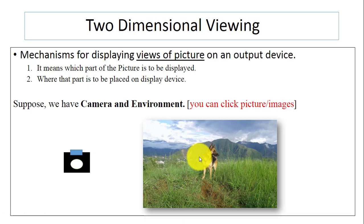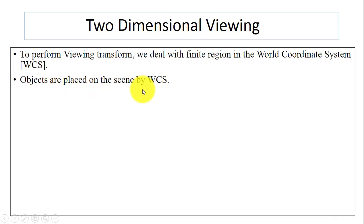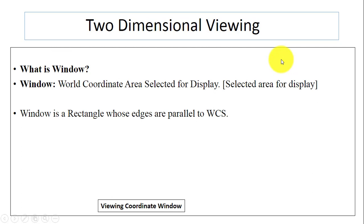Next is WCS, that is the World Coordinate System. In order to perform viewing transformation we will use the world coordinate system. Objects are placed on the scene by WCS, and we will deal with a finite region in the WCS.